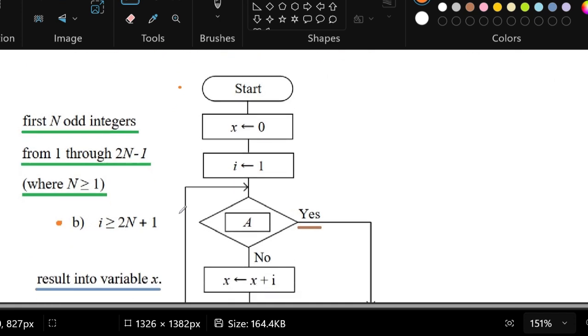And if we look at the description again, it tells us that the first N odd integers from 1 through 2N minus 1 where N is greater than or equal to 1 is what we'll need to do.